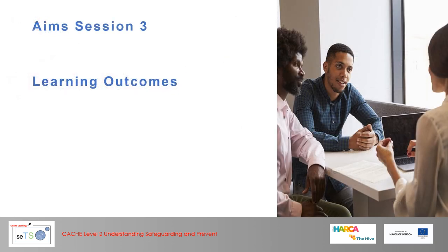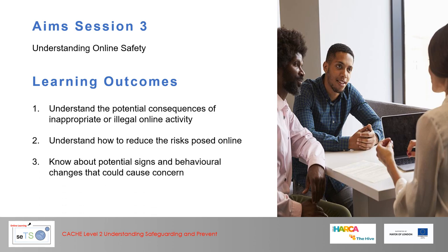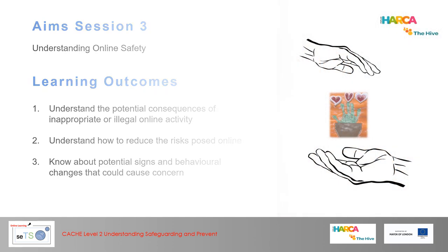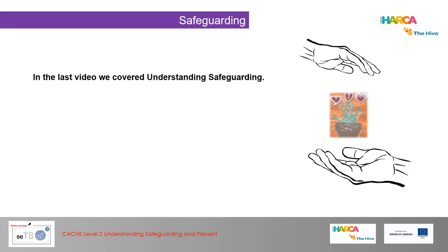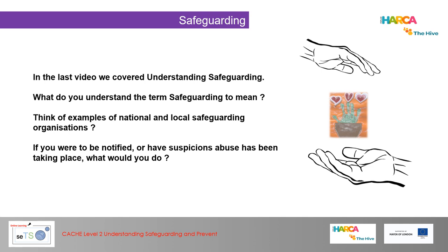Session 3 covers Understanding Online Safety. By the end of this session you'll be able to understand the potential consequences of inappropriate or illegal online activity, understand how to reduce the risks posed online, and know about potential signs of behavioural changes that could cause concern. Following from our last video on understanding safeguarding, think about what safeguarding means, examples of national and local safeguarding organisations, and what you would do if you had suspicions that abuse had been taking place.